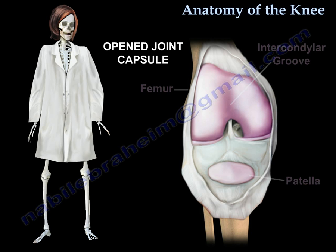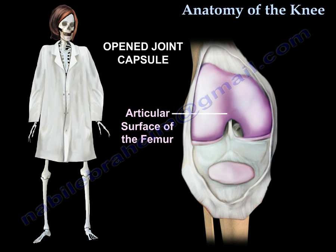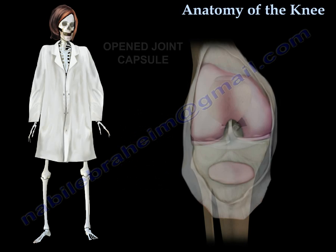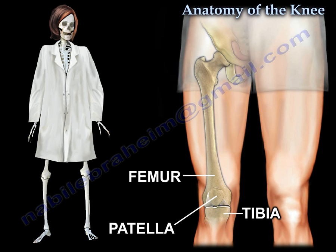If you open the joint capsule, you will find the articular cartilage of the femur and the articular cartilage of the patella. The cartilage within the knee joint allows for smooth movement between the femur, tibia, and the patella.